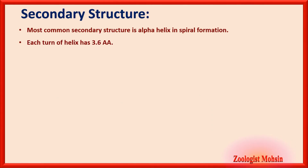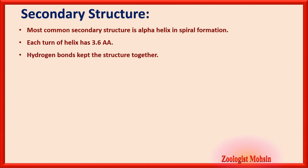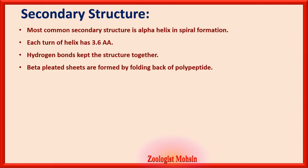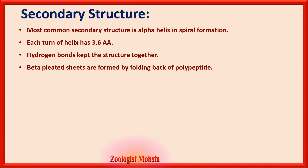Secondary structure: the most common secondary structure is the alpha helix — a spiral formation like a spring. Each turn of the helix has 3.6 amino acids. Hydrogen bonds keep this structure together. Beta pleated sheets are the second type of secondary structure, formed by folding back of polypeptides. So there are two types: alpha helix (most common, spiral) and beta pleated sheets (formed by folding back of polypeptide chains).